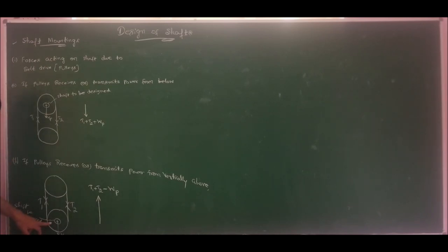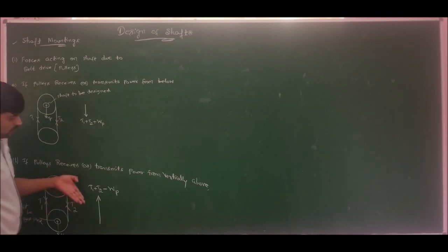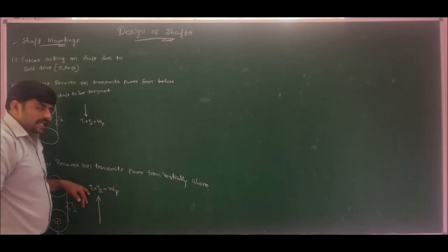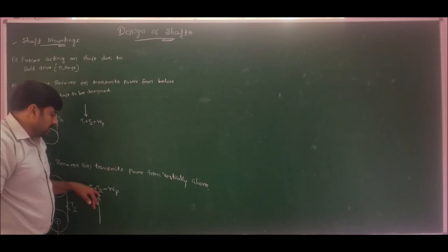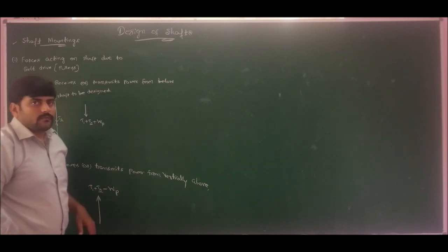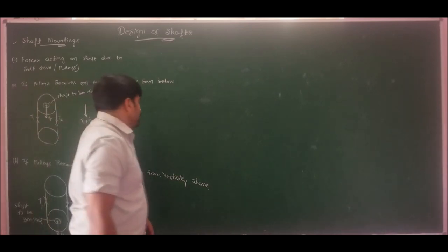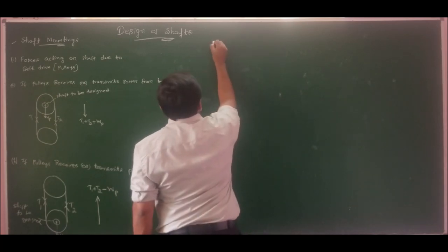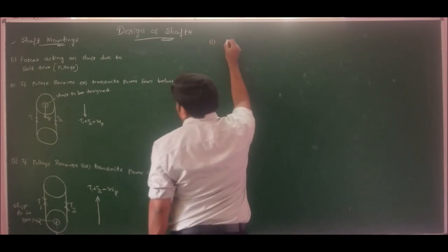So for Case B, the shaft has a load acting vertically downward (pulley weight) while tensions act vertically upward; the resultant force acting on the shaft is vertically upward with magnitude T1 + T2 − W.